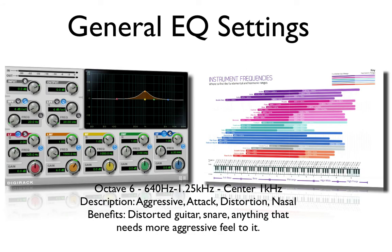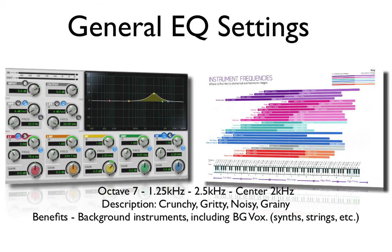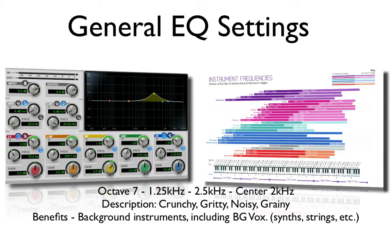Octave 6: 640 hertz to 1.25 kilohertz, center point of 1 kilohertz. This sound is a little more aggressive, has more attack, a little distortion, and is a bit nasally. The benefits of this frequency range are for distorted guitar, snares, or anything that needs a more aggressive feel. Octave 7: 1.25 kilohertz to 2.5 kilohertz with a center point of 2 kilohertz, will sound a little crunchy, gritty, even a little noisy or grainy. This is great for background instruments including synths, strings, and other instruments around those frequencies.